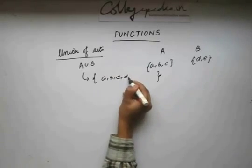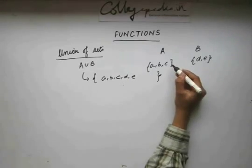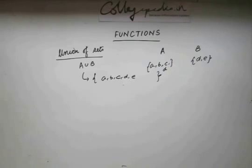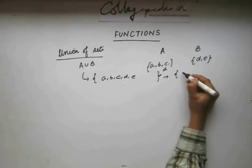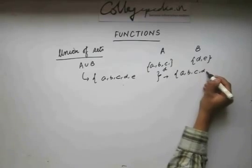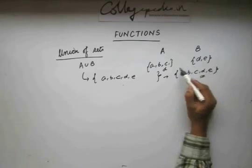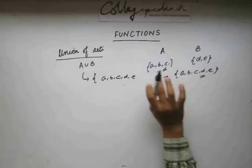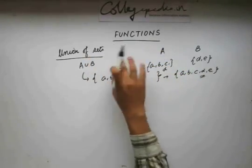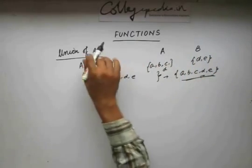A union B will comprise all elements which are in any of these two sets. A case may arise where the two sets have the same element. In that case, in A union B, we don't repeat the element — we write it only once. Going by the definition, A union B should have all elements in either set A or set B, and writing D once satisfies that condition.